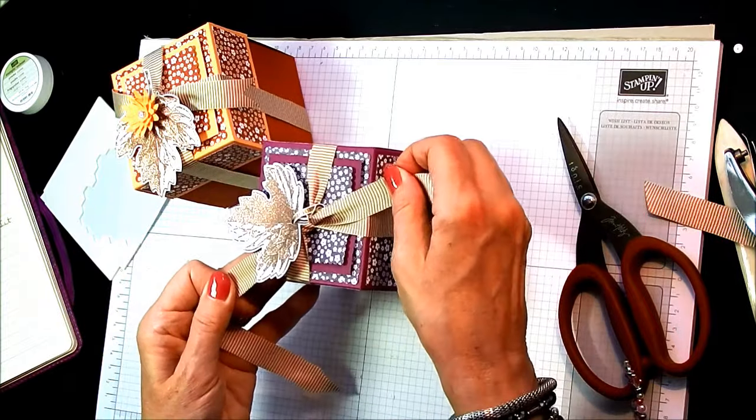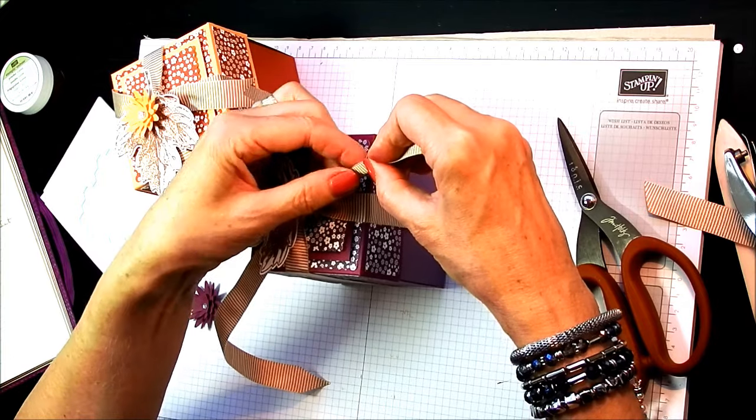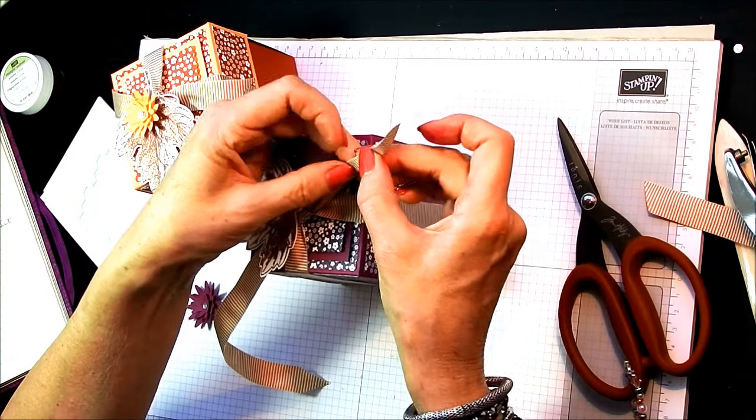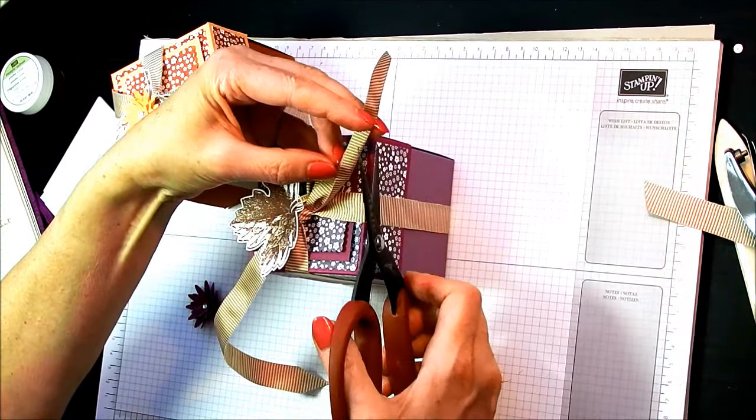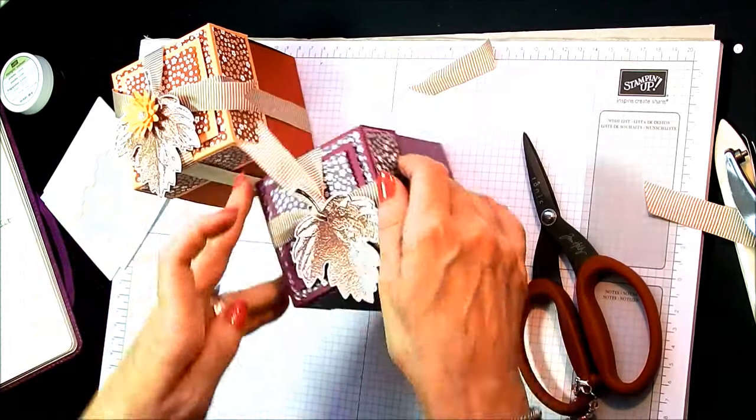And then that will tuck under the other ribbon. And then what I've done is to give a nice edge to my ribbon, fold it in half and cut off at an angle that way and when it opens out you've got some nice tails.